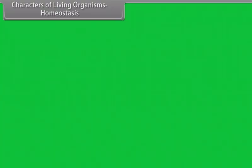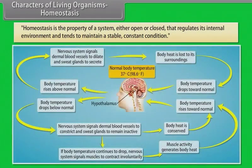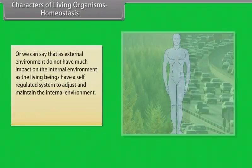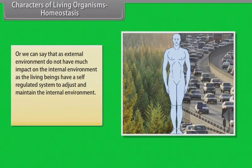Homeostasis is the property of a system, either open or closed, that regulates its internal environment and tends to maintain a stable constant condition. The external environment does not have much impact on the internal environment as the living beings have a self-regulated system to adjust and maintain the internal environment. The phenomenon is called homeostasis.